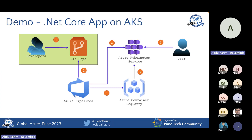For the demo overview, we'll cover the modern flow we discussed: push code, trigger pipelines, push a Docker image to a registry, and deploy the image to the Kubernetes service. Finally, the user accesses the service via their browser. The only manual step is me making a small code change and pushing it — everything else is automated using Azure DevOps pipelines.